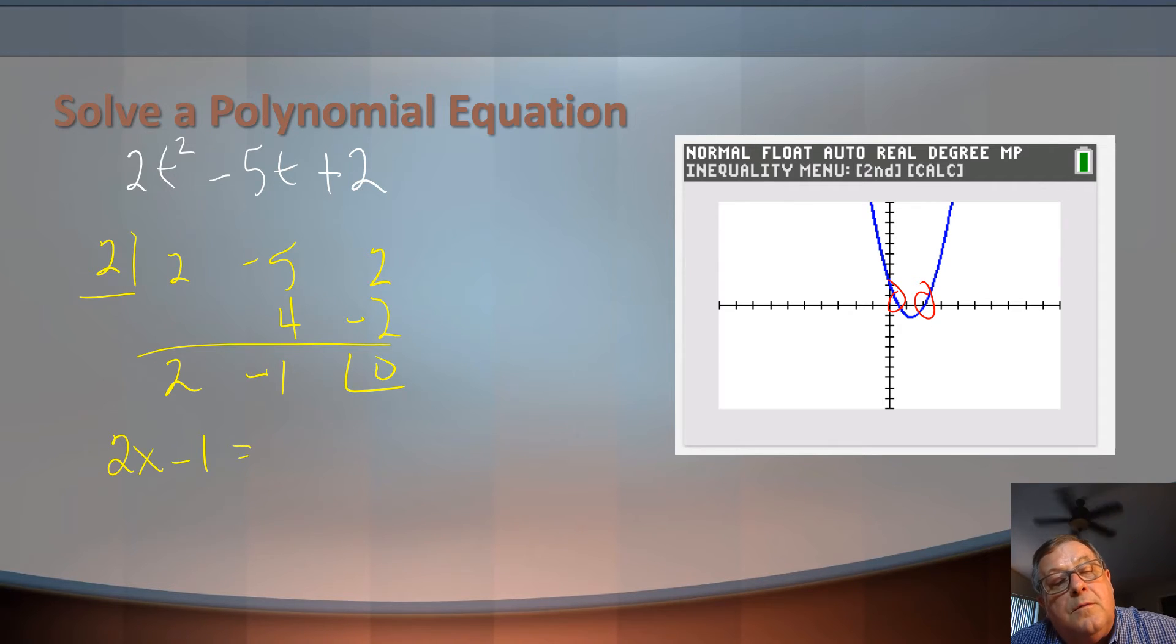And then this depressed polynomial is 2x - 1. Let's set that equal to 0. Add 1 to both sides. So 2x equals 1, and x equals 1/2, which looks pretty good to what I see here on the graph.